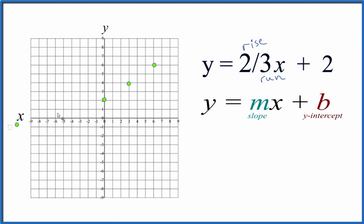And you can see our line. You could also go down two, one, two, and over three in the opposite direction. Those points, they're on the line as well.